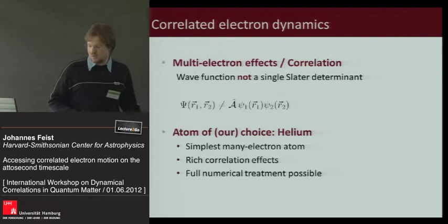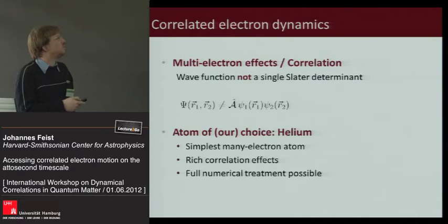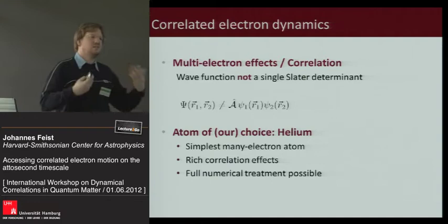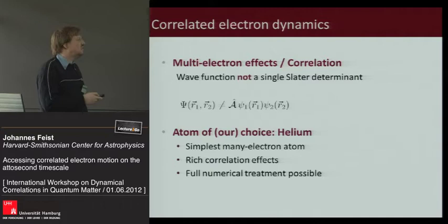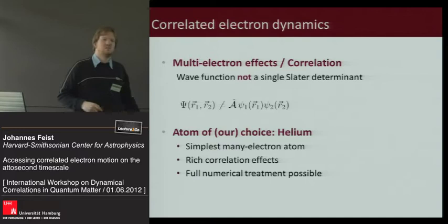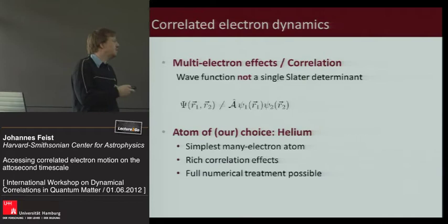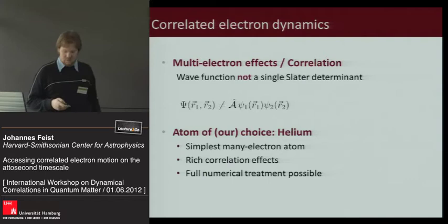What we want to look at with these tools are multi-electron effects or correlation effects, meaning the wave function is not a single Slater determinant — not just a product of single-particle orbitals. The atom we use mostly is helium: it's the simplest many-electron atom, which means we can still treat it relatively precisely with calculations, and it already has rich correlation effects, so we can do full numerical simulations and examine those effects in quite a lot of detail.